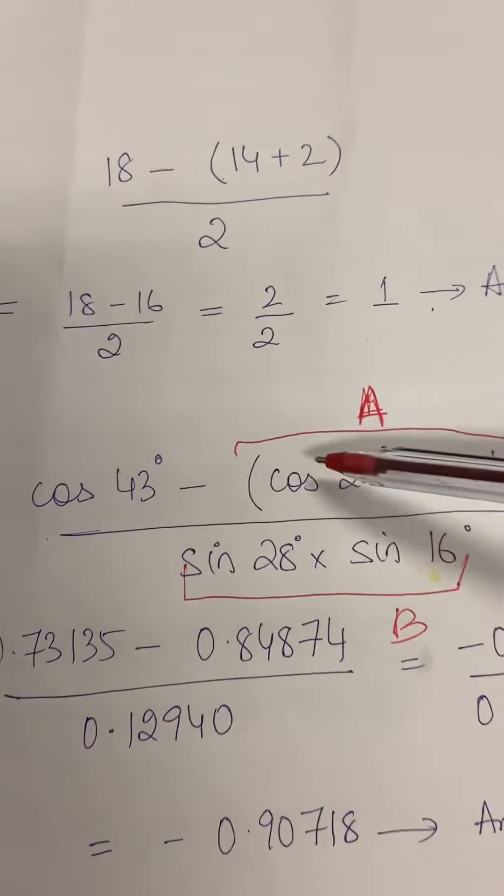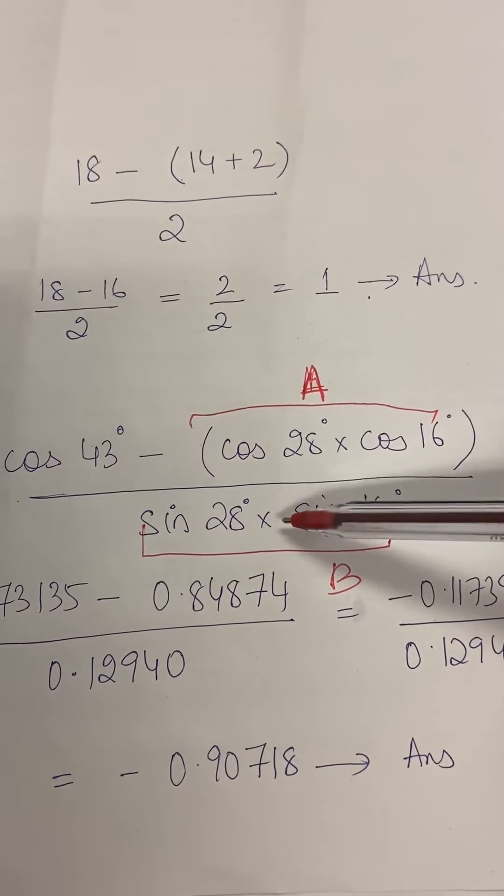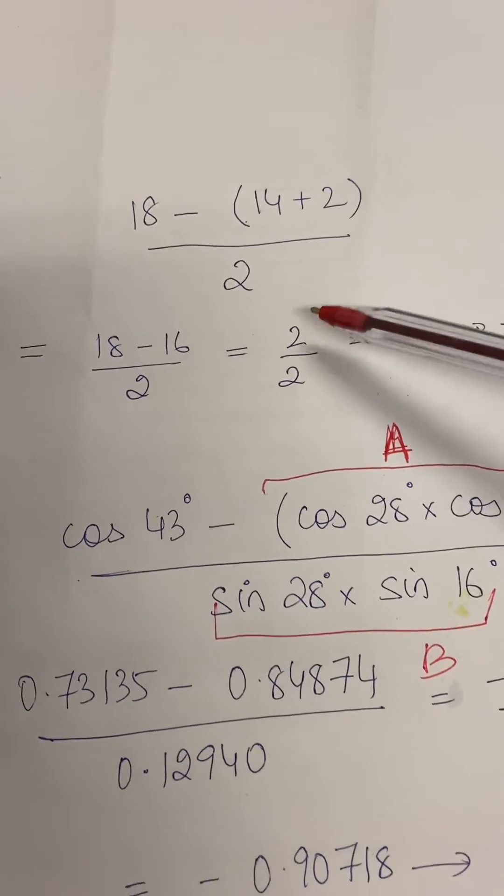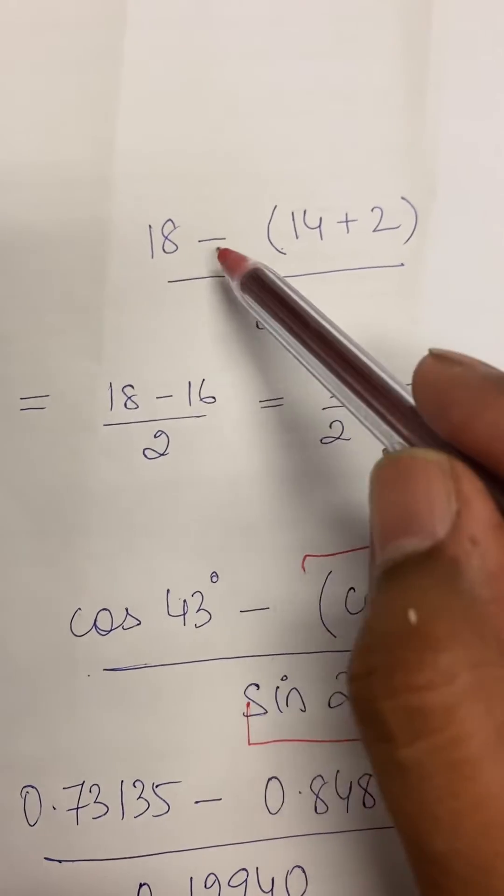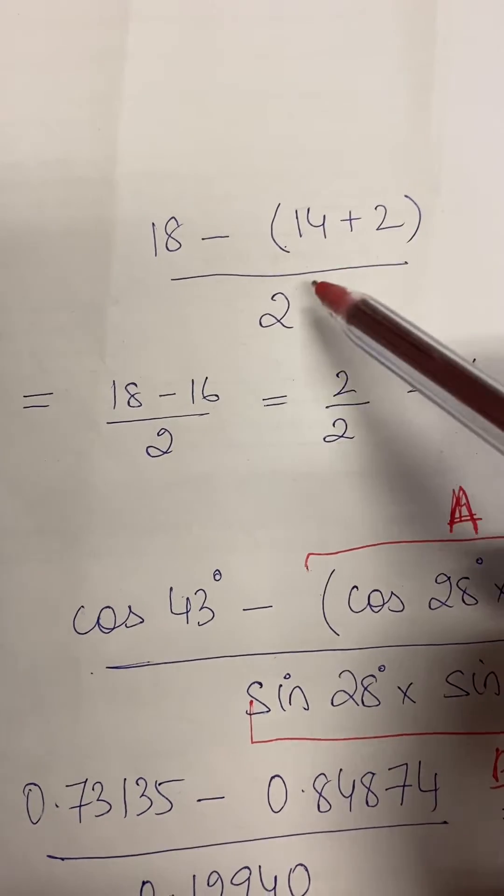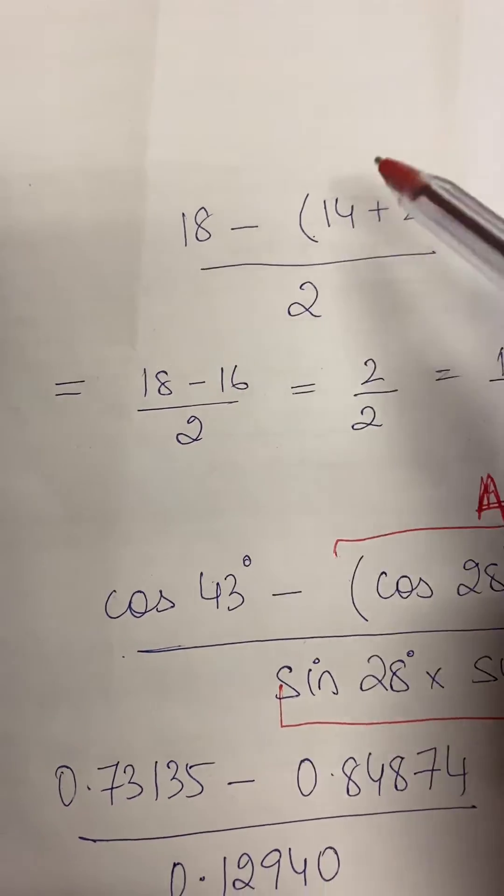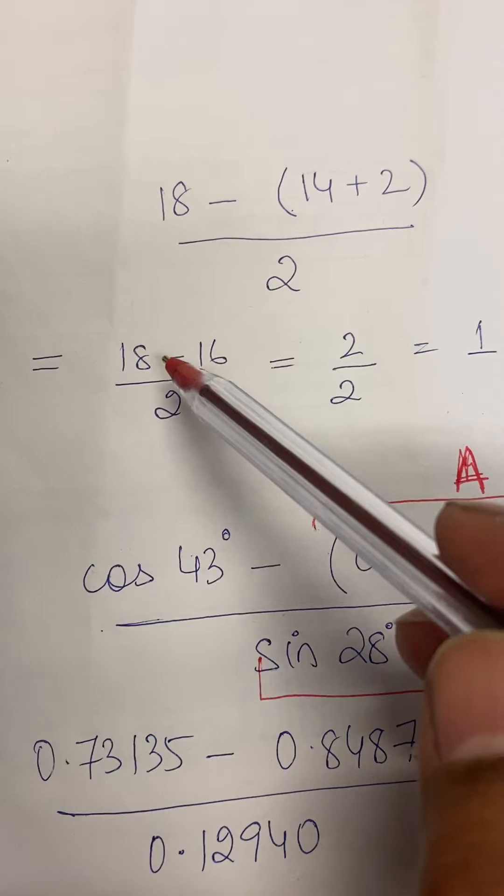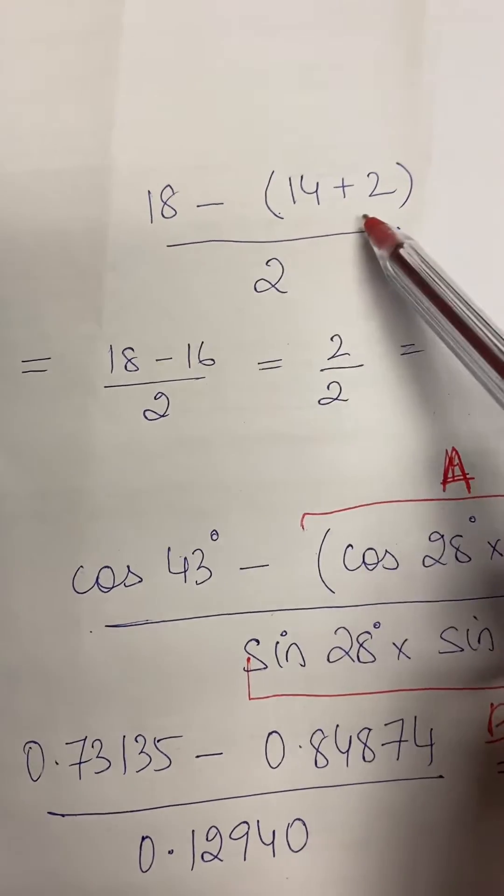Here we have a very simple example where you have 18 minus 14 plus 2, divided by 2. If I do it manually, of course it's a very simple one, so it will be 18 minus 14 plus 2 becomes 16, divided by 2. So 2 divided by 2 is 1.